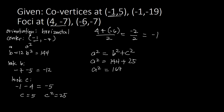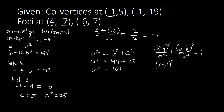Now we write the standard equation. Since it's horizontal: (x − h)²/A² + (y − k)²/B² = 1. Plugging in: H is −1, so (x + 1)² over 169, plus K is −7, so (y + 7)² over 144, equals 1. This is our standard equation of our ellipse.